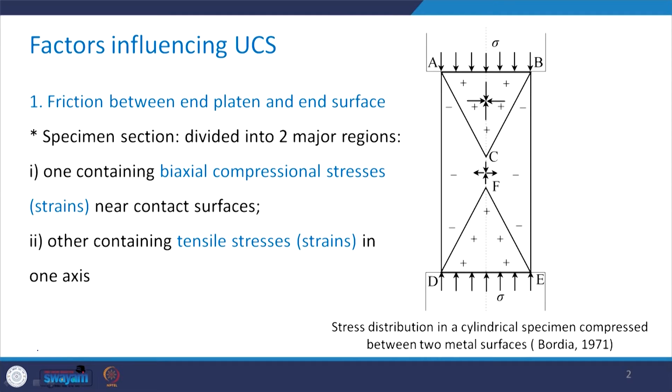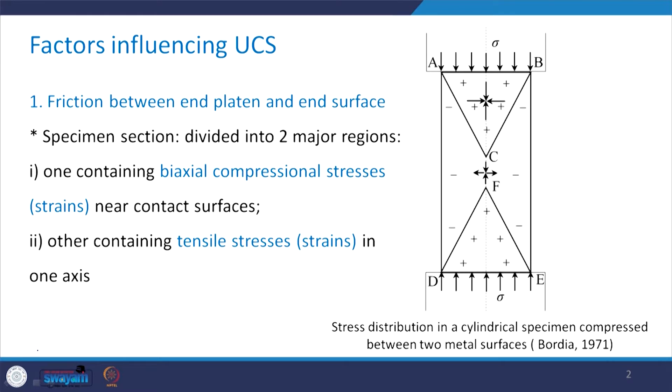To start with, let us discuss the various factors which influence the UCS. The first and foremost important one is the friction between end platen and the end surface. This is the specimen, and the loading platen through which the load is being mobilized onto the specimen creates friction at that interface. The specimen section can be divided into two major regions: two conical portions and the remaining portion.